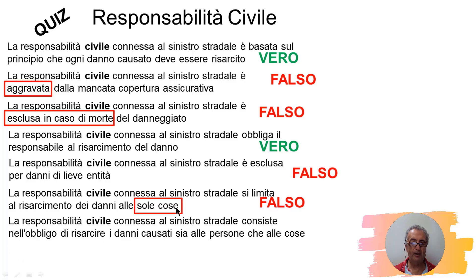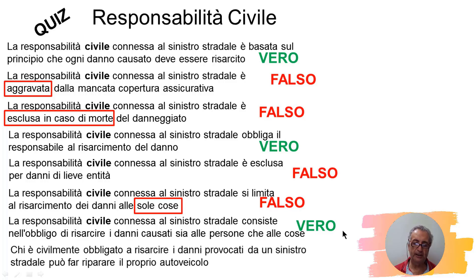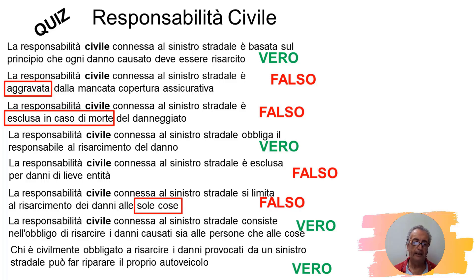La responsabilità civile consiste nell'obbligo di risarcire i danni causati sia alle persone sia alle cose – questa è l'affermazione corretta. Chi è civilmente obbligato a risarcire i danni può far riparare il proprio veicolo. Il danno al mio veicolo non me lo paga nessuno, né l'assicurazione, quindi solo io. Pertanto, è chiaro che potrò far riparare il mio veicolo.